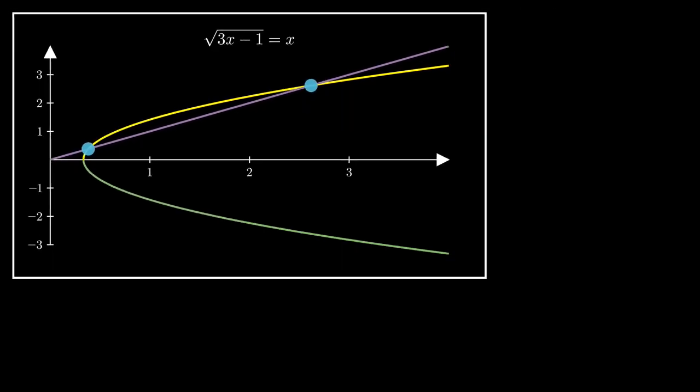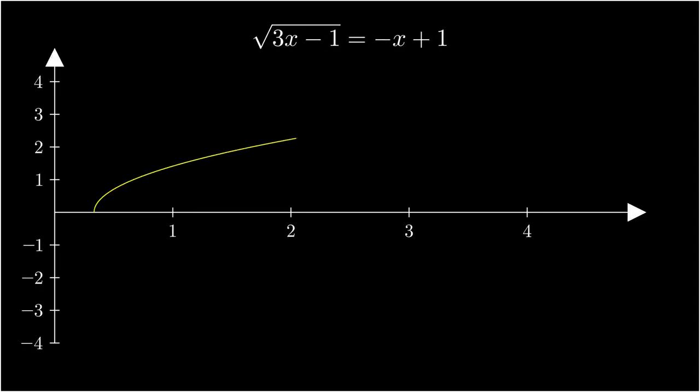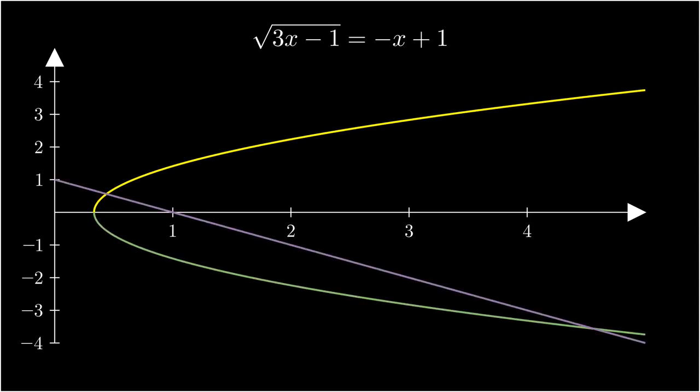How about if we change the right hand side to read root 3x minus 1 equals negative x plus 1? Again, our solutions will be nasty irrational numbers, but we know that this one will work in our original equation, and this one will be extraneous.